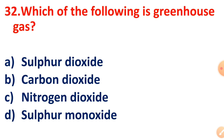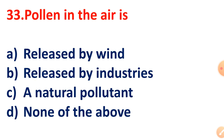Question 32: Which of the following is a greenhouse gas? The right answer is Carbon dioxide. Question 33: Pollen in the air is what? The answer is a natural pollutant.